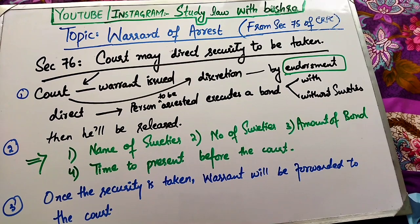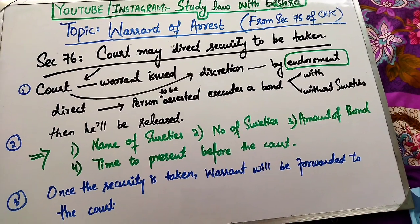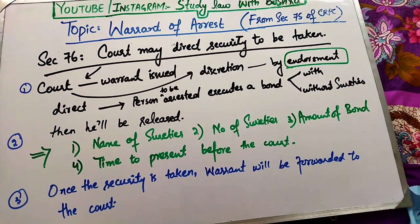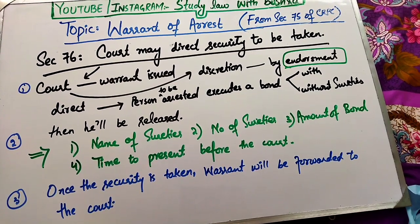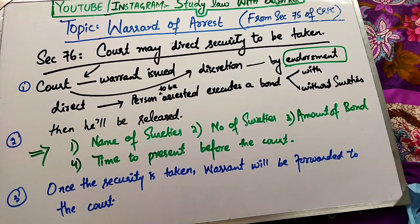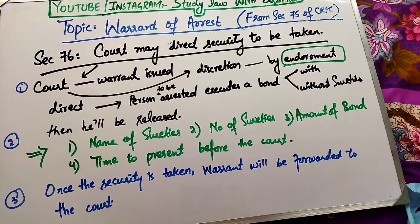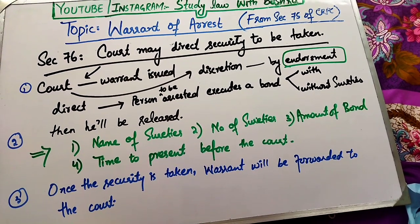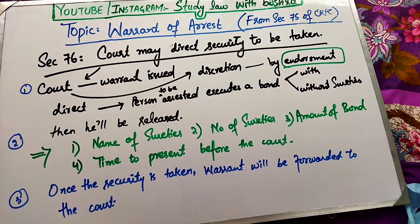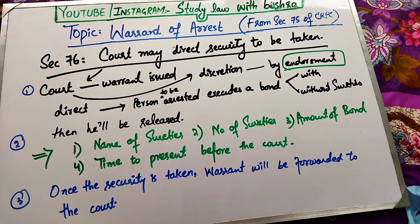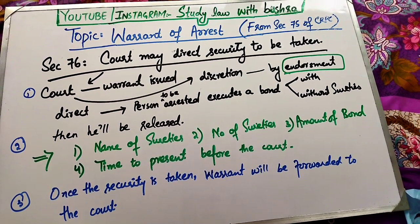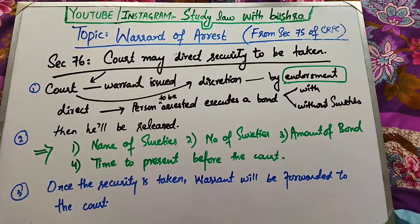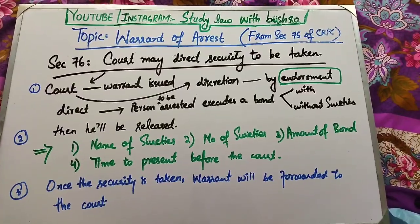جس کے لیے warrant issue ہوا ہے اس کے sureties کے نام اور numbering لکھی جائے گی، اور amount of bond بھی لکھا جائے گا. چوتھے نمبر پر time اور place لکھا جائے گا کہ وہ court میں کب present ہوگا. Clause 3 کہتی ہے کہ جب security لے لی جائے تو وہ bond court کو forward کر دیا جائے گا.